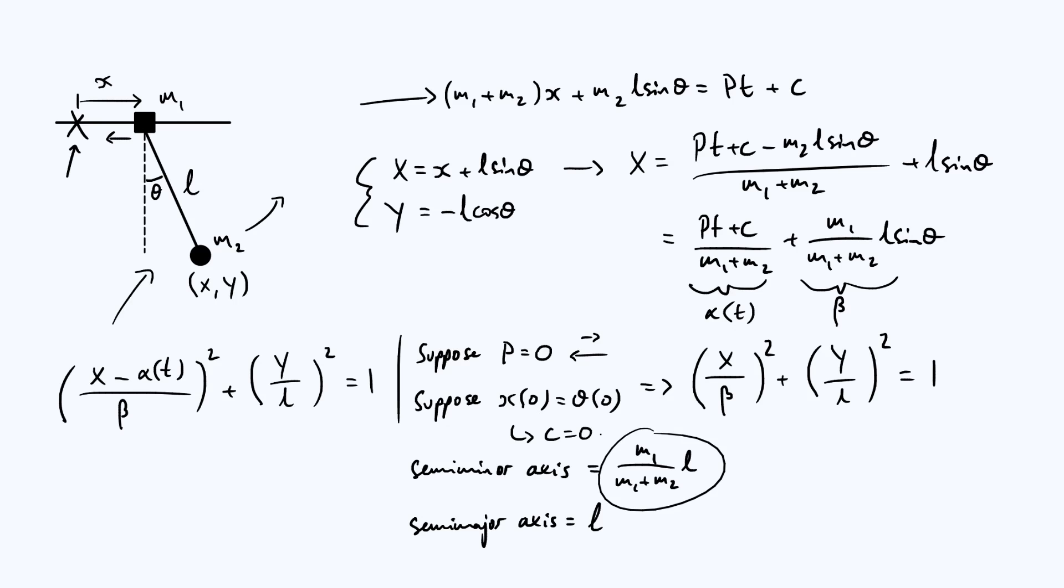Of course, it's always good to consider limiting cases. In particular here, the easier thing to do is think about what happens if m1 is much bigger than m2. In that case, the denominator is basically just m1 and m1 over m1 is 1. And so the semi-minor axis becomes L. Then you have a circle because the semi-minor and semi-major axes are both L. And you've recovered the solution. The kind of obvious fact that a pendulum with a fixed support will just move in a circle.